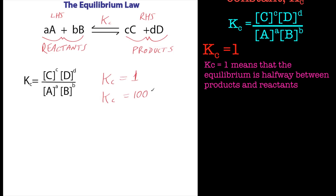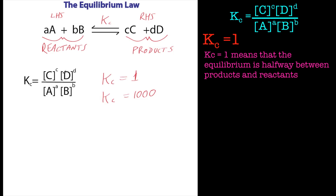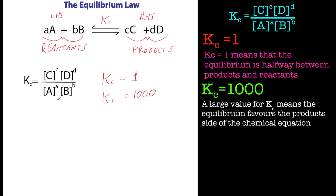What about a Kc of one thousand? A Kc of one thousand means the value on the top must be larger than the value on the bottom, since we're dividing by the bottom. This is saying there's a thousand times more products than reactants. That means the reaction is being driven over to the right-hand side — there are more products than reactants.